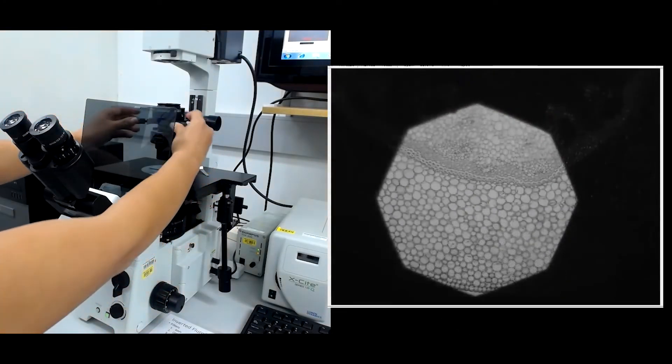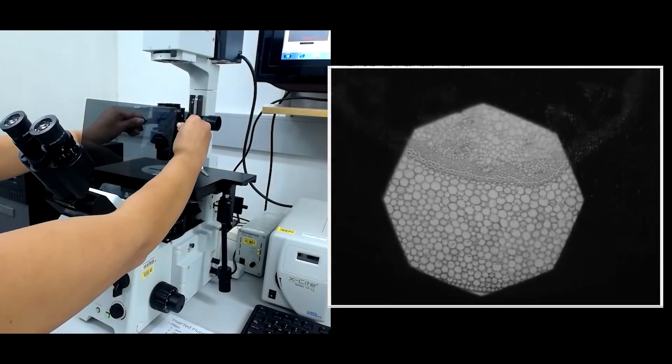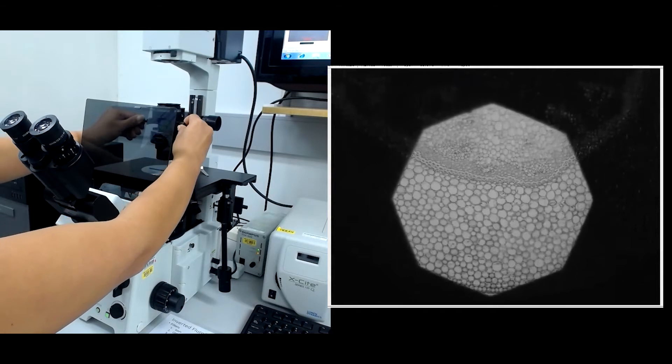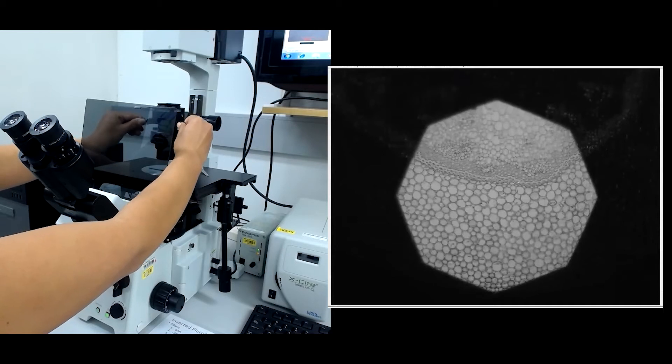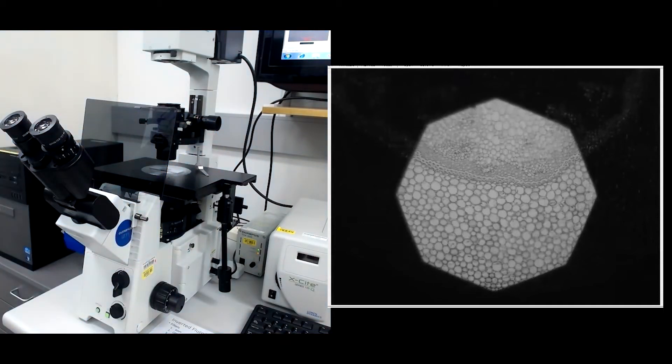Center the polygon in the middle of the field of view using the positioning knobs. The knobs move the condenser lenses on a diagonal, which can be counterintuitive but gets easier with practice.